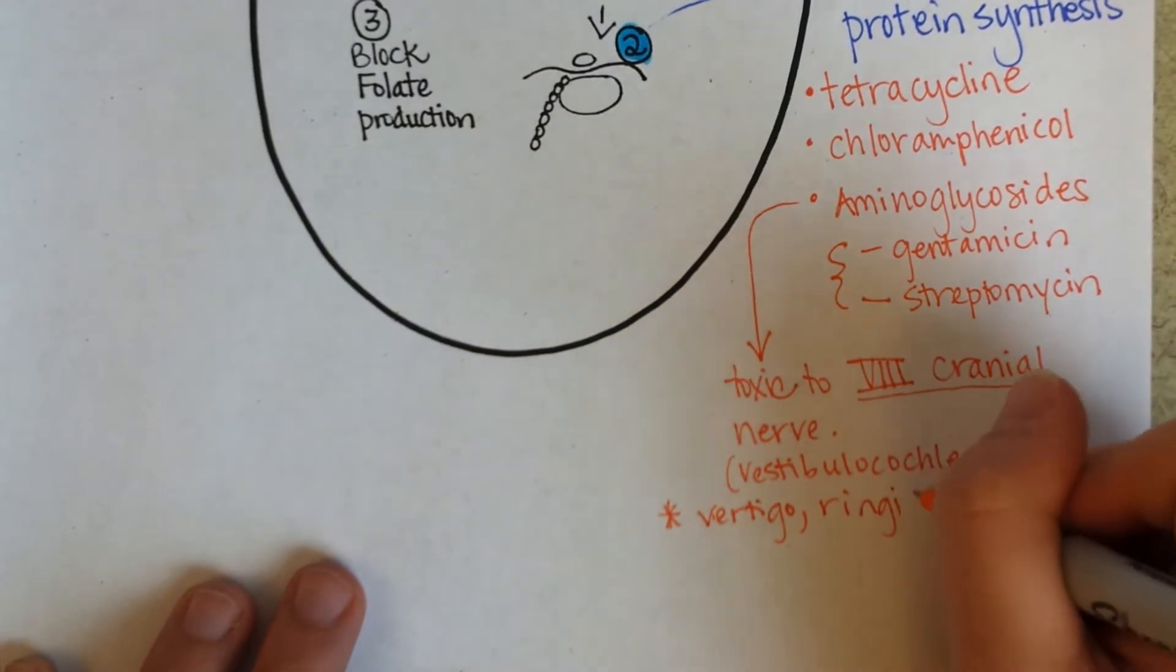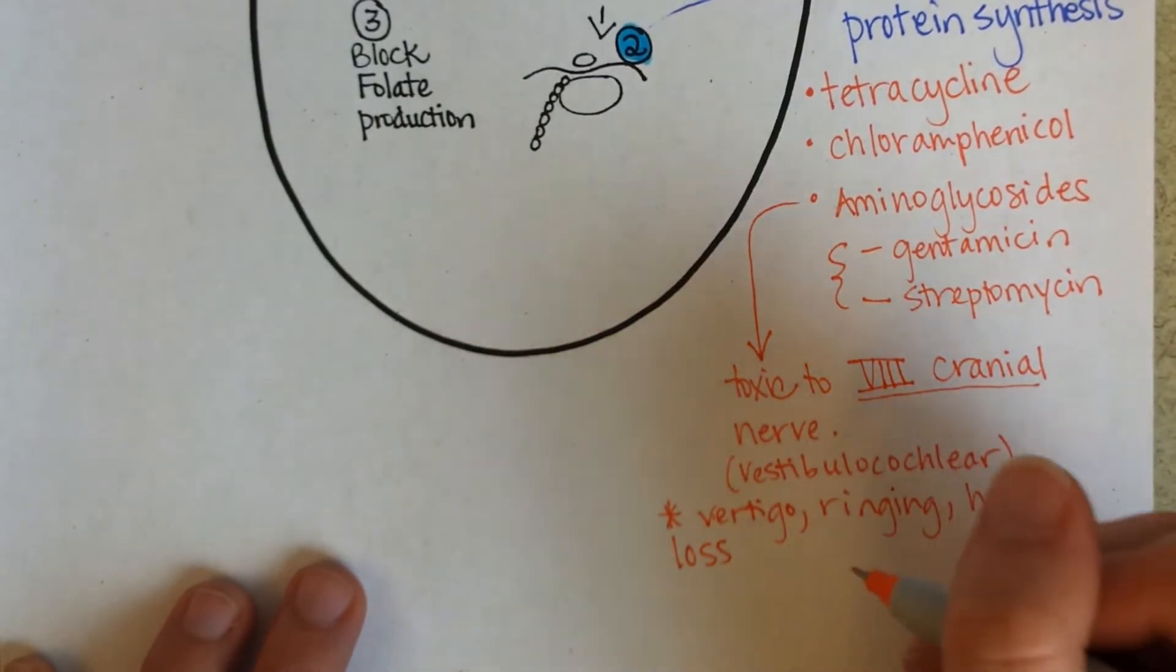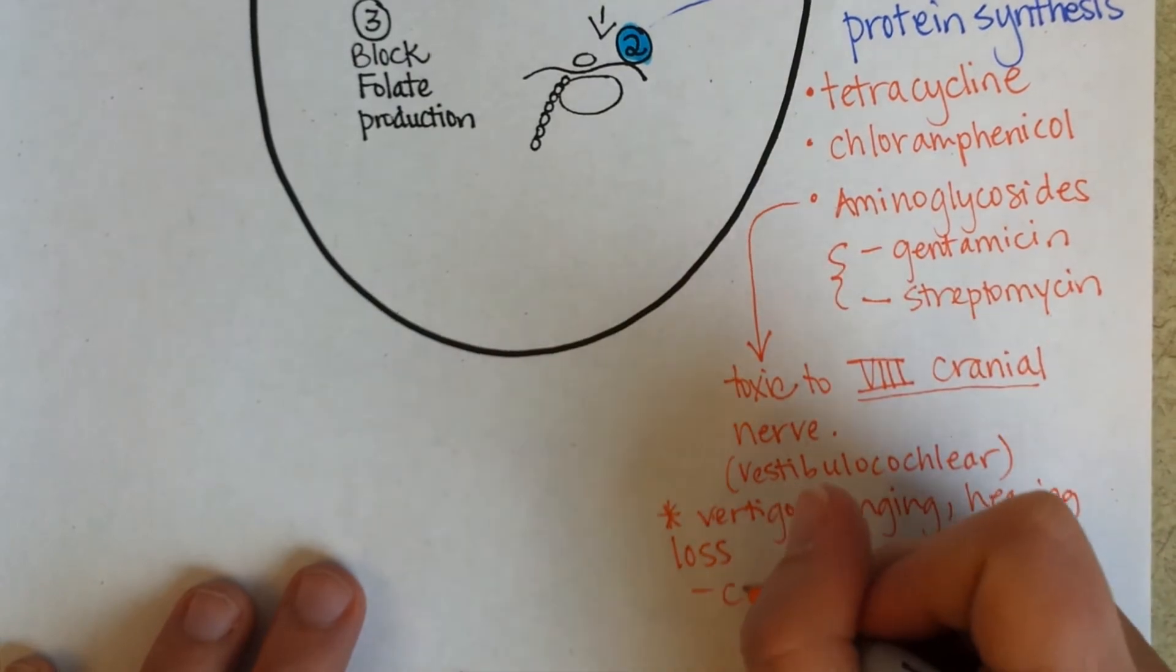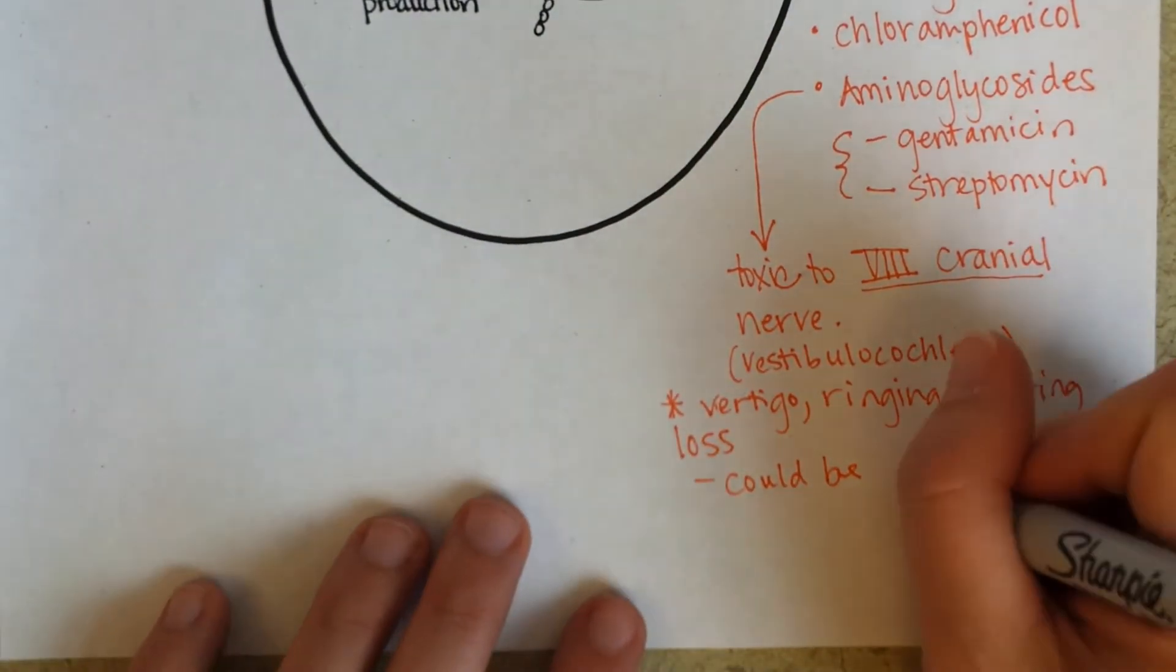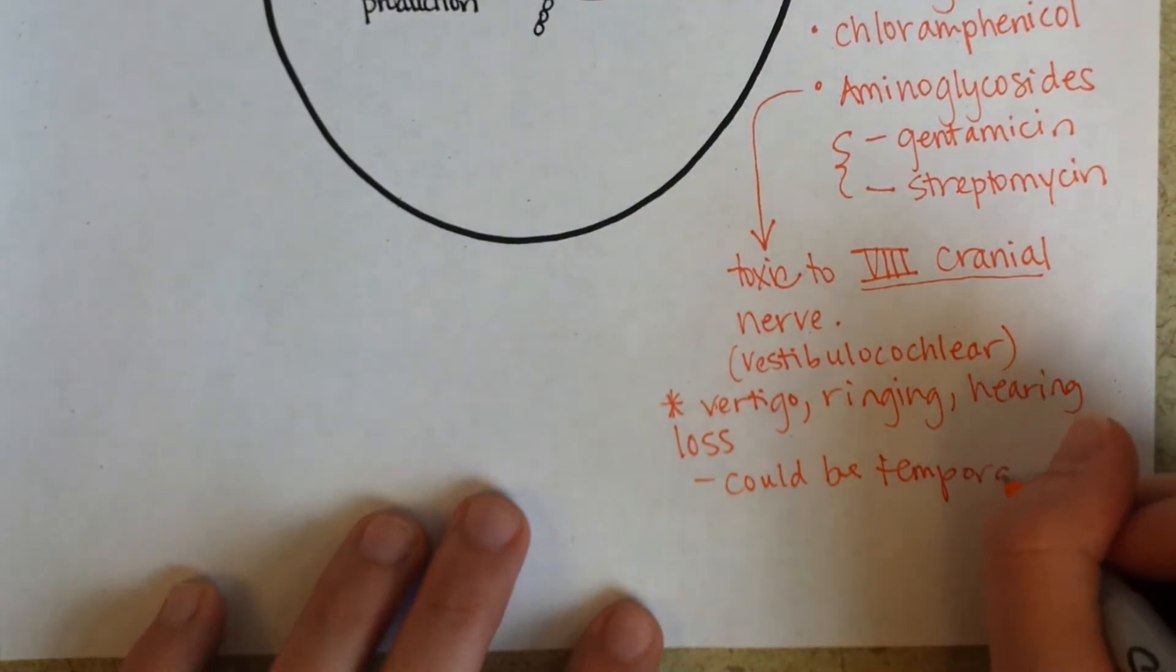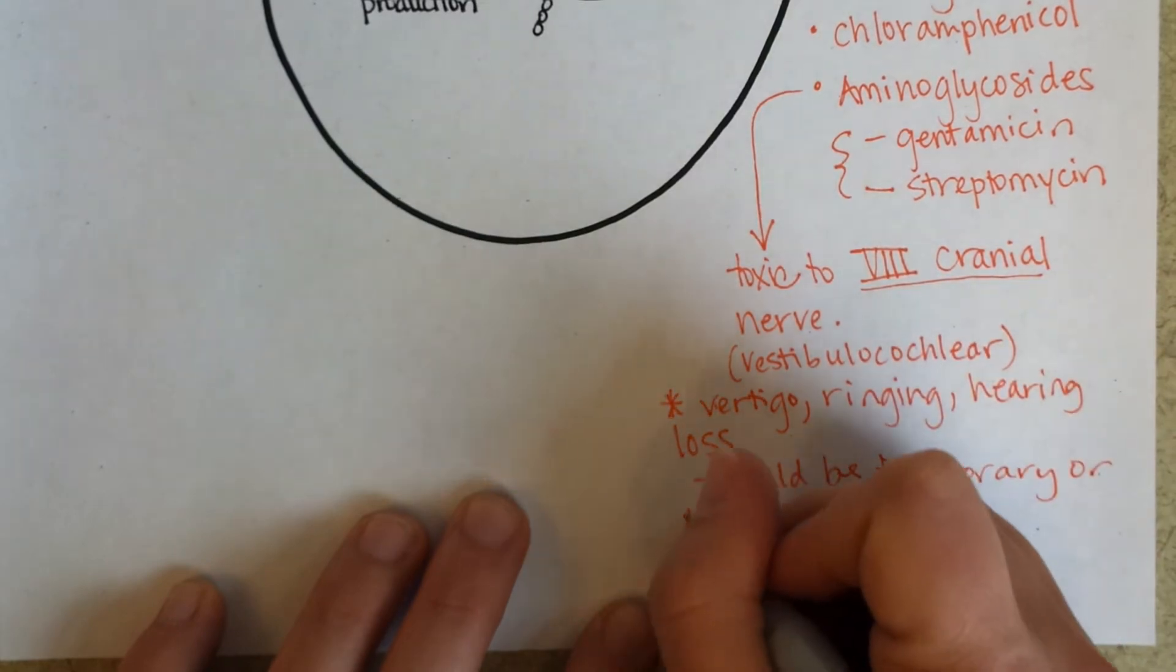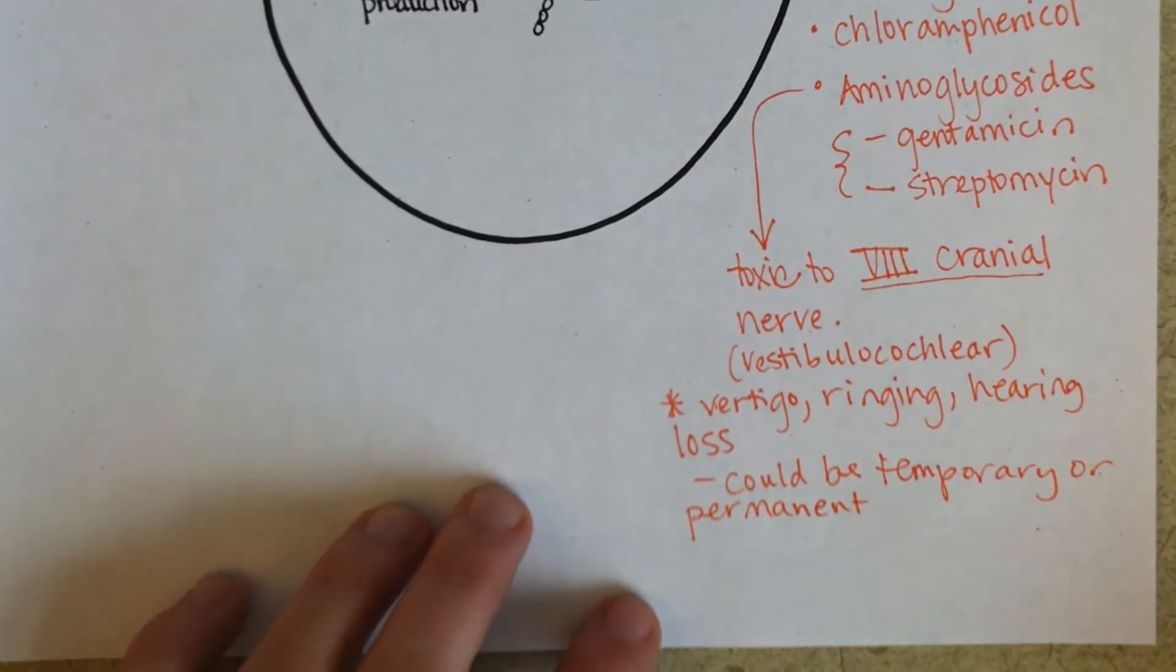So some of the symptoms of that toxicity might appear with vertigo in the patient, ringing in the ears, actual hearing loss which may be temporary or permanent. You can just hope that it's temporary.